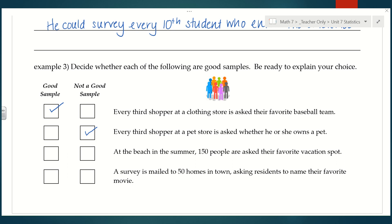For the third one: at the beach in the summer, 150 people are asked their favorite vacation spot. If you're at the beach asking people their favorite vacation spot, there is a good chance they are going to say the beach — so that is not a good sample. And the last one: a survey is mailed to 50 homes in town asking residents to name their favorite movie. I think this would be a good sample — you're sending surveys to seemingly random people around town, and there doesn't seem to be any bias.